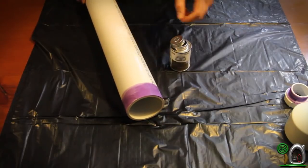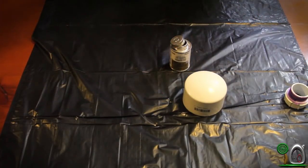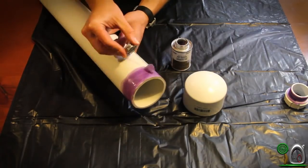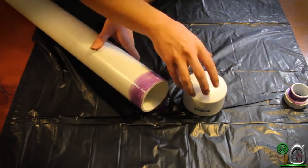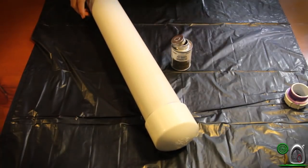Next, we're going to take the end cap and glue that to the bottom of the PVC pipe. Alright, and that's going to set up.